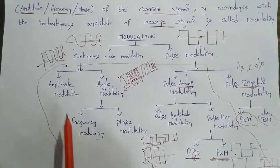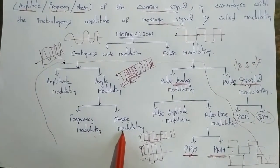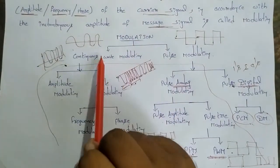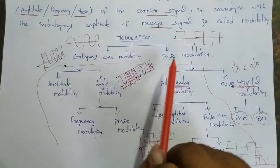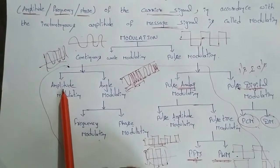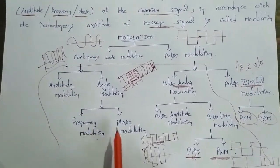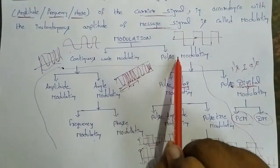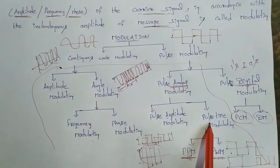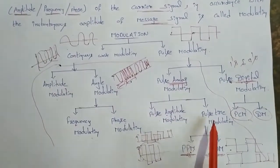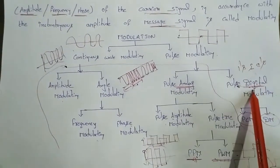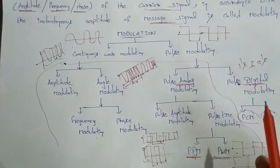To summarize: AM, FM, PM for continuous wave. Modulation has two types — Continuous and Pulse. Continuous has three types: Amplitude, Frequency, Phase. Pulse analog has three types: Pulse Amplitude, Pulse Position, Pulse Width. Digital pulse has two types: PCM and DM.